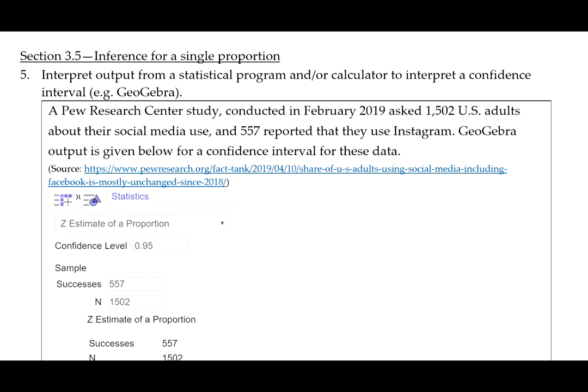A Pew Research Center study conducted in February 2019 asked 1,502 U.S. adults about their social media use, and 557 reported that they use Instagram. GeoGebra output is given below for a confidence interval for these data.